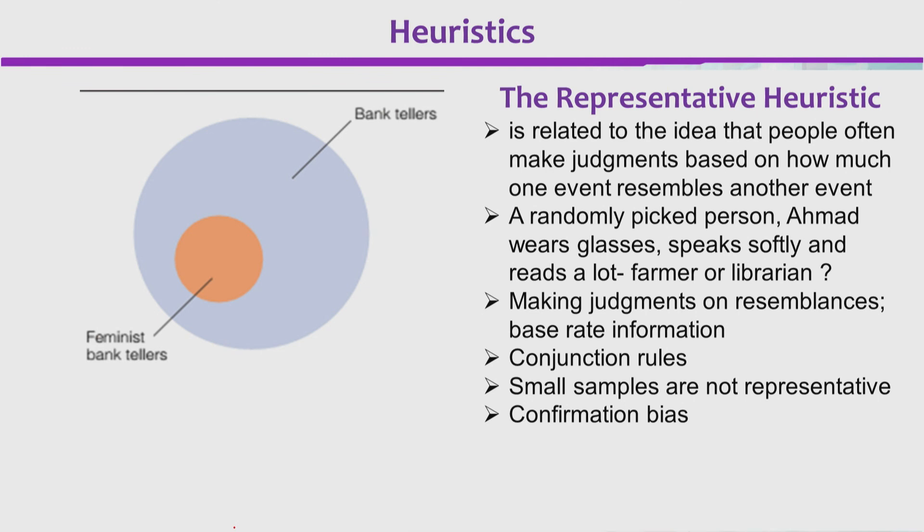Conjunction rules hai. Small samples are not representative. Aur confirmation bias jo hai, wo hum karte hain, kyunke koi ek cheez hoti hai, toh humara wo idea confirm ho jaata hai, aur hum us pe pakke ho jaate hain, halat ki wo aik ki cheez, aik ki dafa hoji hai.